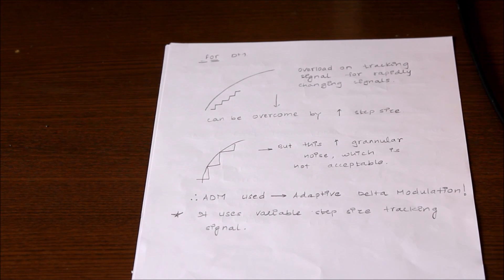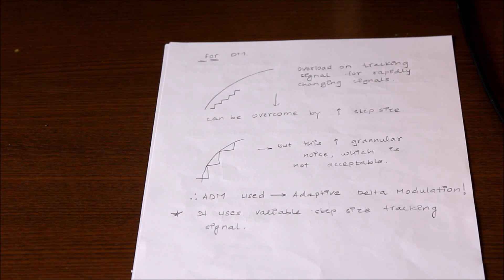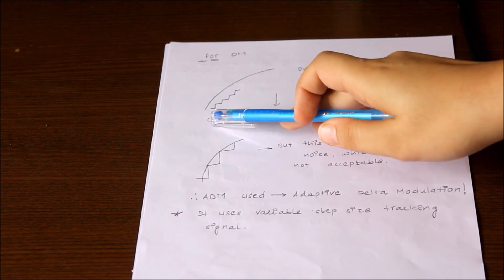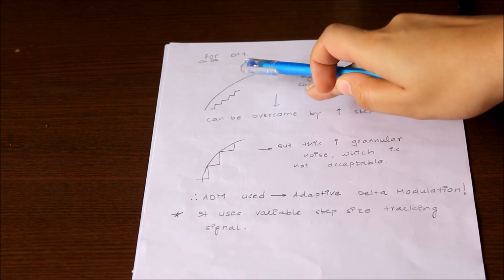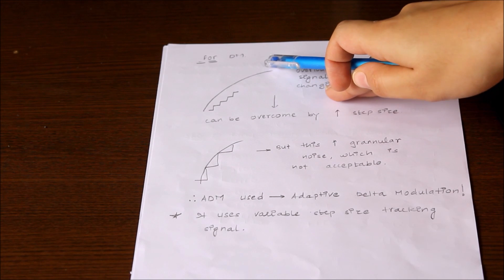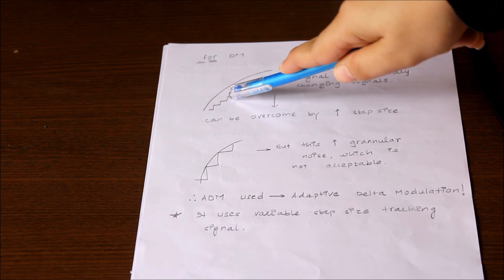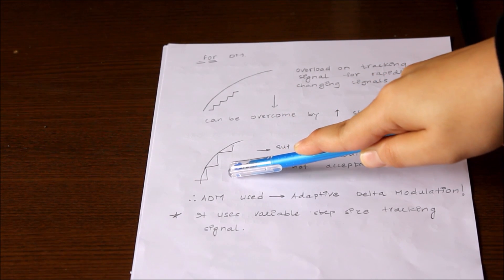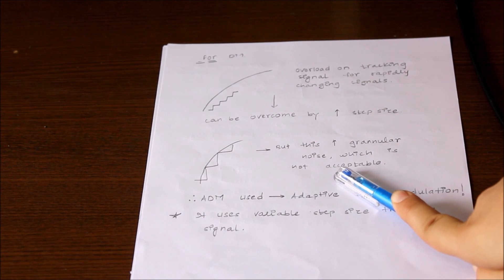We already know what DM is. In the case of DM, the major problem we have is the slope overload error. This occurs because the tracking signal has a slope lesser than the actual signal, so it cannot track the actual signal properly. One way to improve this is to increase the step size of the tracking signal, but that will generate a lot of granular noise, which is unacceptable.